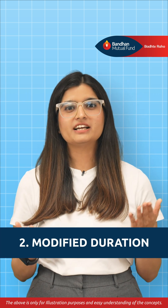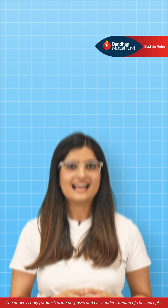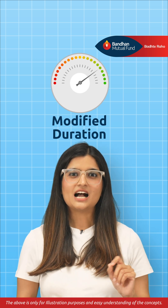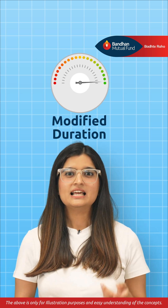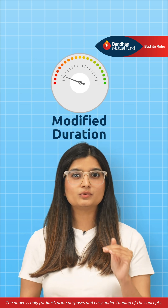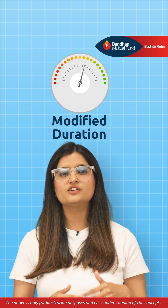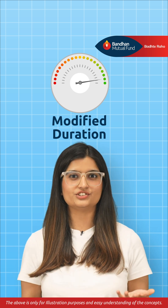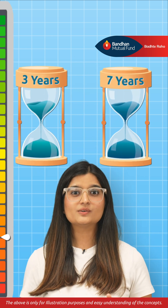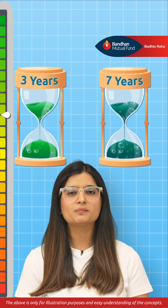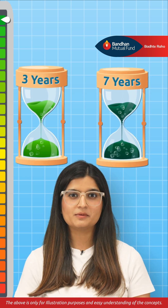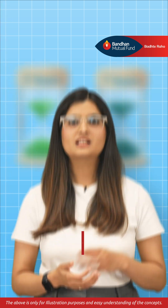Number 2: Modified duration. It's like your bond sensitivity meter. Higher duration means bond prices will jump or drop more when interest rates change. For example, if interest rates rise, high duration bonds lose more value compared to low duration ones.